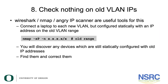Once you're done moving, check that there's nothing remaining on the old VLAN IPs. You can use tools like Wireshark, Nmap, or Angry IP Scanner. Connect a laptop to the new VLAN but configure it statically with an IP address in the old VLAN range, then run Nmap to see if anything is listening. If you discover devices, they have static configurations — change them to DHCP on that range and continue until nothing is listening.